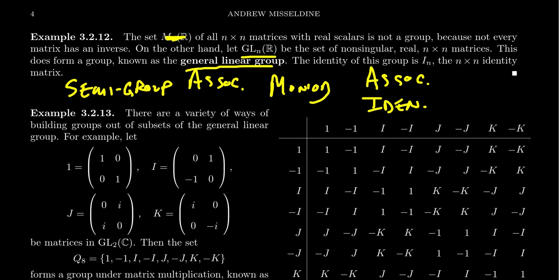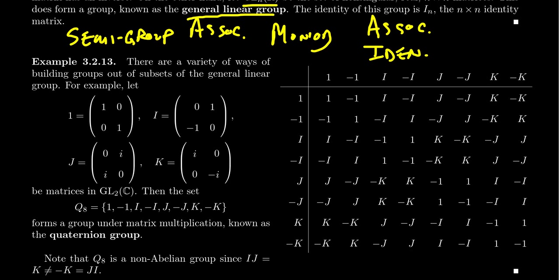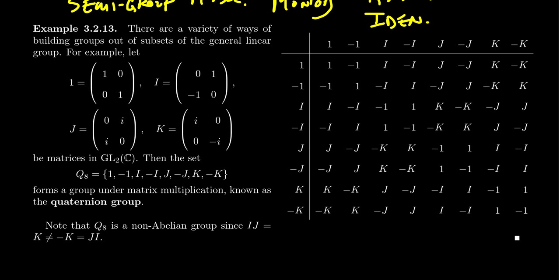Now we can actually build a group inside of the general linear group, and you can see this illustrated below. This group is going to be a group of eight matrices, and it's called the quaternion group. To simplify things, let me use the following symbols. We're going to use the number 1 to describe the identity matrix: [1, 0; 0, 1]. And we're going to use the letter I to represent the matrix [0, 1; -1, 0].